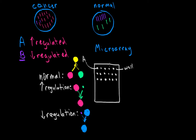The nice thing about a microarray is that we can scan a bunch of genes at the same time, have a computer read each and every single one of these wells, and look at exactly which genes are upregulated and which genes are downregulated.